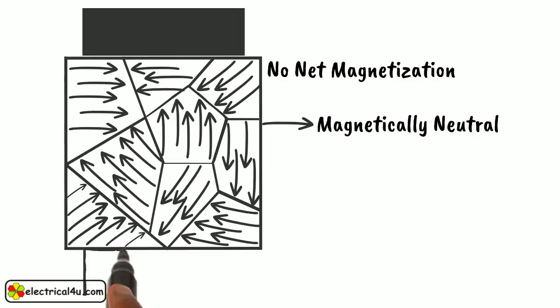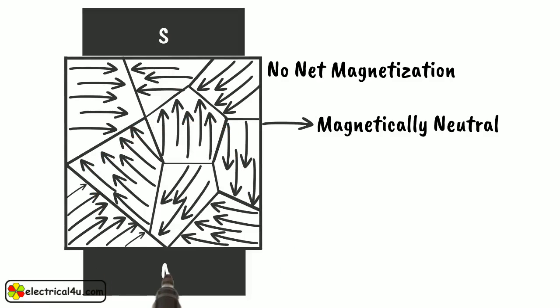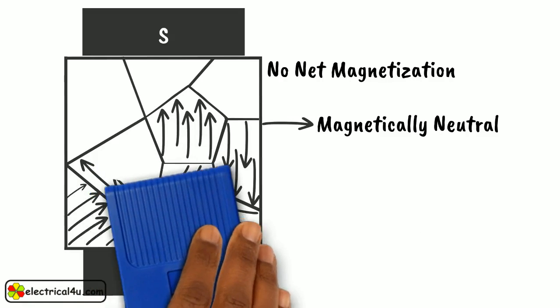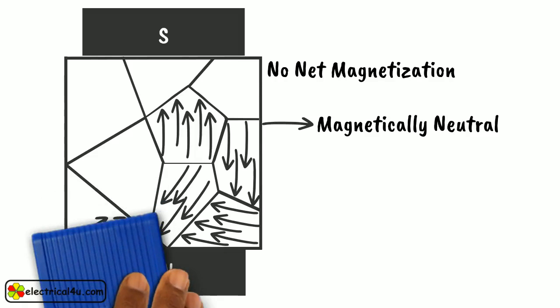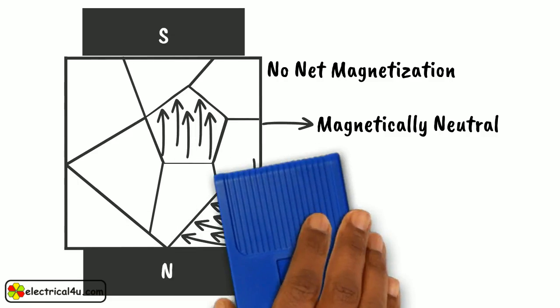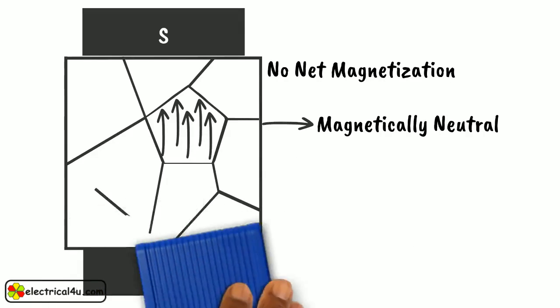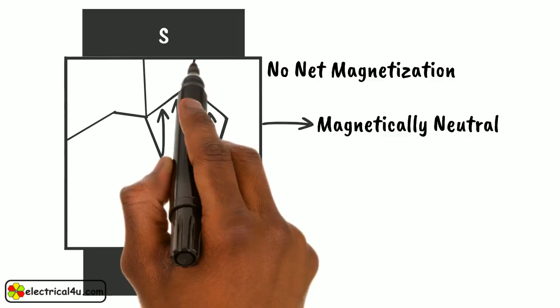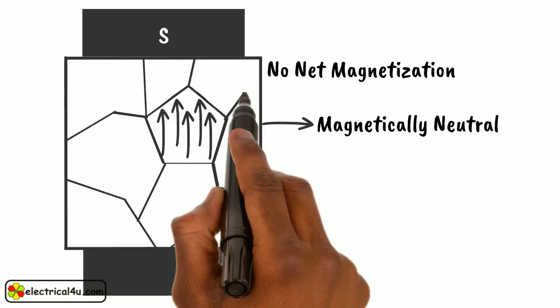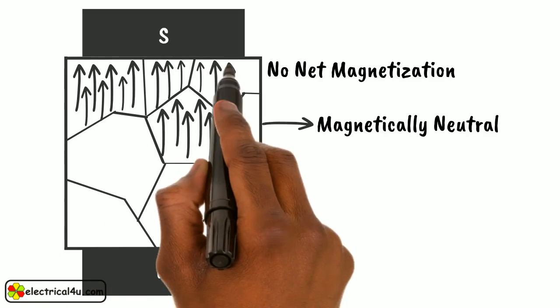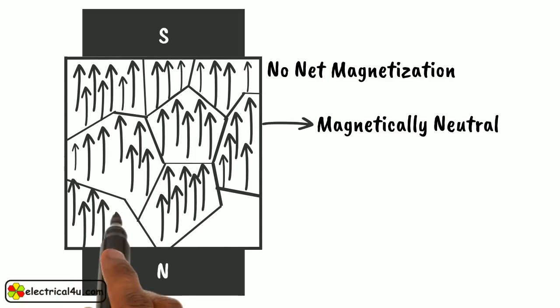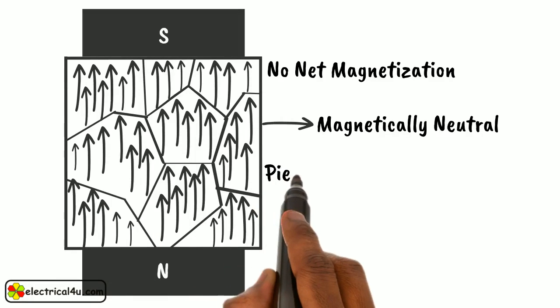Now, let us examine what will happen if a magnetic field is applied to a piece of iron. The magnetic domains align themselves in the direction of applied magnetic field. The piece of iron becomes magnetized.